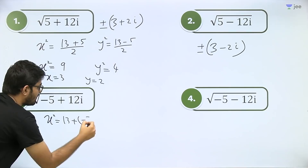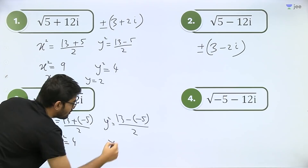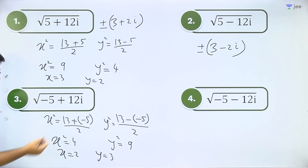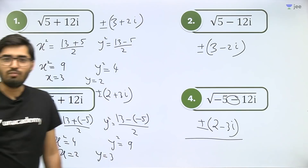For this one, x² = (13 + (−5)) / 2 = 4, and y² = (13 − (−5)) / 2 = 9. So x = 2 and y = 3. Sign in between is plus, so the answer is ±(2 + 3i), and the other is ±(−2 − 3i).